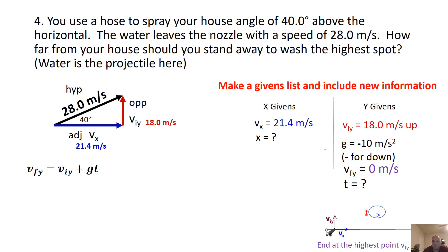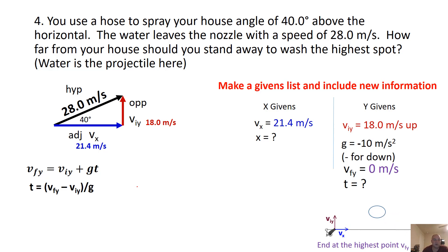We use VFY equals VIY plus GT, from the standard 1D motion equation — just get used to using these and realize they're the same. Rearrange your formula, put everything in. You're going to get 1.8 seconds. So to get to the highest point, it takes 1.8 seconds.